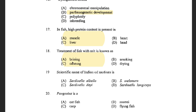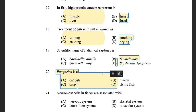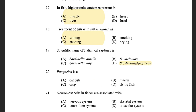Next question: Scientific name of Indian oil sardine is — options are Sardinella albella, Sardinella melanura, Sardinella dayi, and Sardinella longiceps. The answer is Sardinella longiceps. Sardinella albella is known as White sardine, and Sardinella melanura is known as Black-tip sardine.